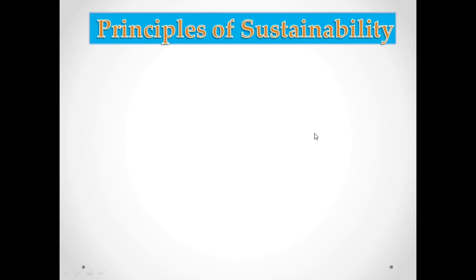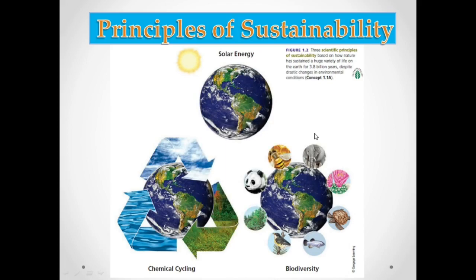Now let's move to our next topic which is the principles of sustainability. There are actually three principles of sustainability, and life on earth has been sustained billions of years ago because of these three principles: number one is the dependence on solar energy, number two is chemical cycling, and the last one is biodiversity.